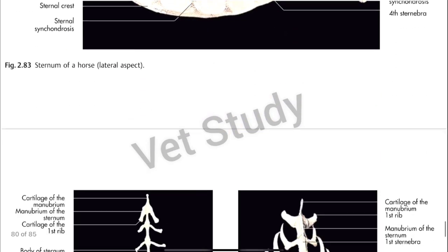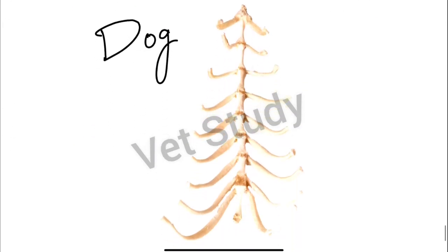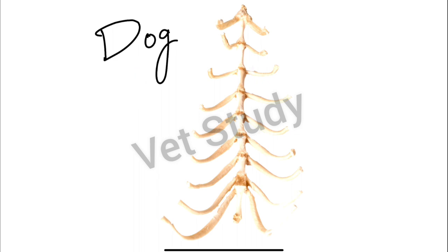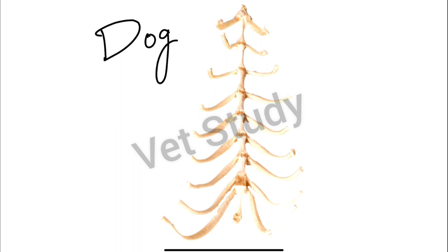Now let's talk about the sternum of the dog. The sternum of dog is formed by eight sternibrae. Generally they do not fuse with each other — as you can see, these eight sternibrae are distinct. They may fuse at very old age, but at young age they are distinct. The first sternibrae is the longest one. The cranial end is blunt and the xiphoid cartilage is narrow.